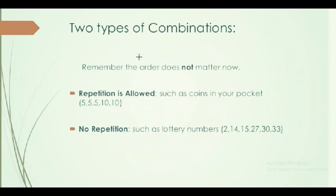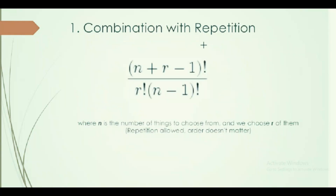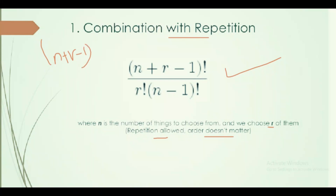There are two types of combinations: with repetition and without repetition, like coins in your pocket. A combination is a choice of R things from a set of N things without replacement, where order doesn't matter. The formula is: N plus R minus 1 factorial over N minus 1 factorial times R factorial.